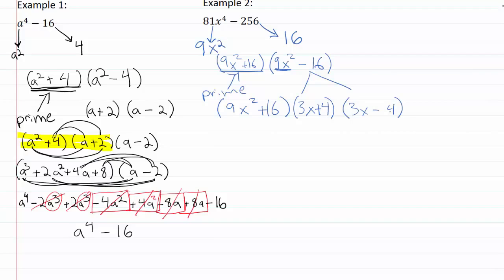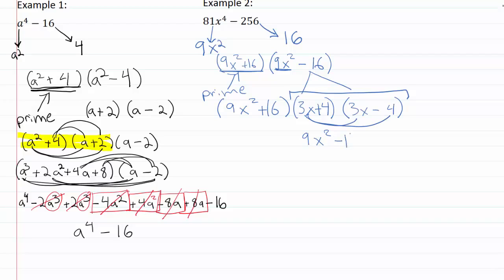This time when I FOIL back together I'll multiply the last two factors first — multiplication order doesn't matter. Three x times three x gives nine x squared; three x times negative four gives minus twelve x; four times three x gives plus twelve x; and four times negative four gives negative sixteen.